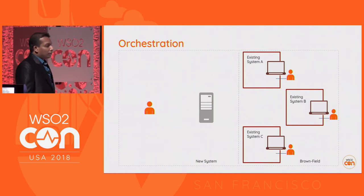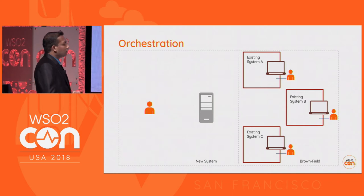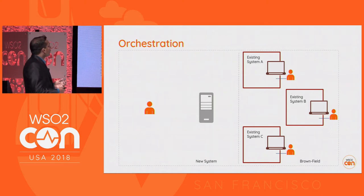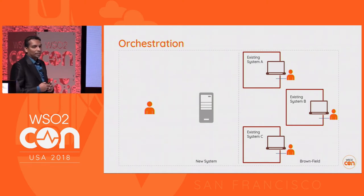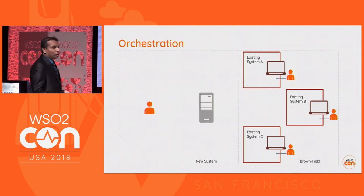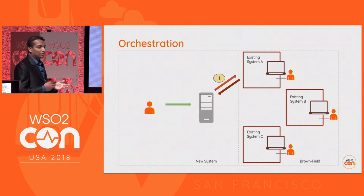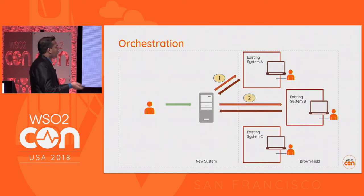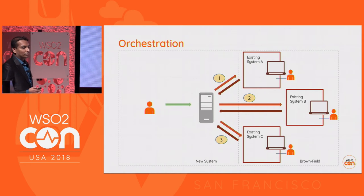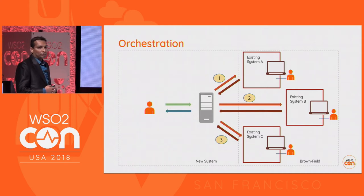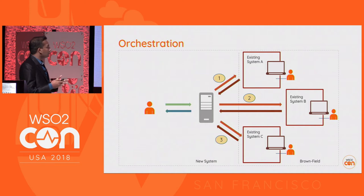When we are building new systems out of existing systems, we might need to combine multiple existing systems together — that is what is meant by service orchestration. In the brownfield we have three different systems: A, B, and C. When we receive a message, we first invoke system A and get the result, use that result to invoke system B, and then finally use that to invoke system C and deliver the response back to the client. This is a service chaining scenario, though orchestration can happen based on other patterns too.